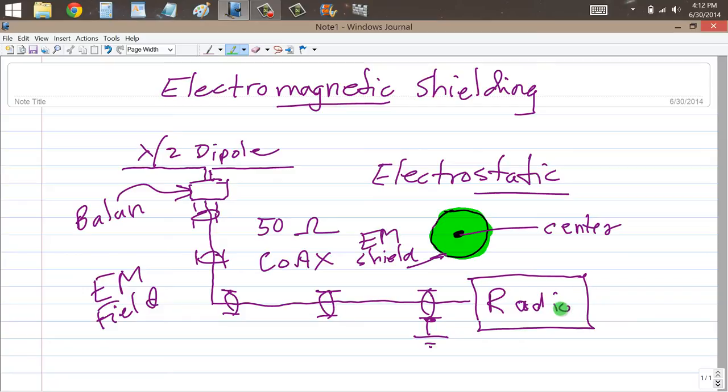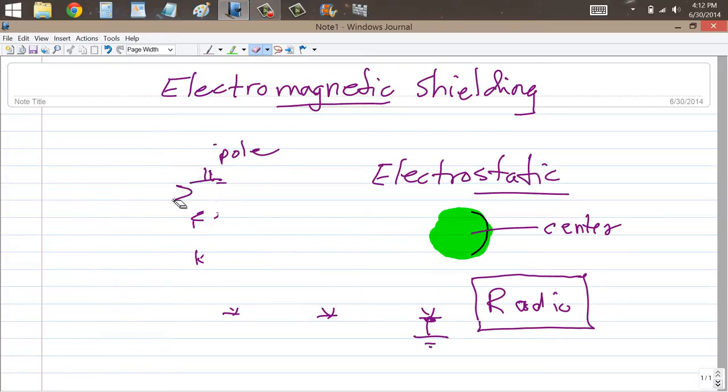The antenna, that's a very common example of electromagnetic shielding in amateur radio applications or shortwave listening applications.